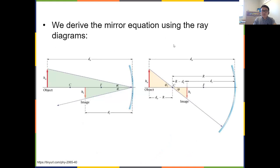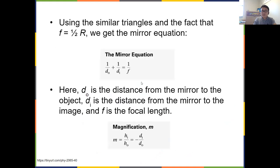We derived the mirror equation using ray diagrams and similar triangles. The mirror equation is: 1/d_o + 1/d_i = 1/f, where d_o is the distance from the mirror to the object, d_i is the distance from the mirror to the image, and f is the focal length, which equals one-half the radius of curvature. Magnification is defined as the height of the image divided by the height of the object, which also equals minus d_i over d_o.